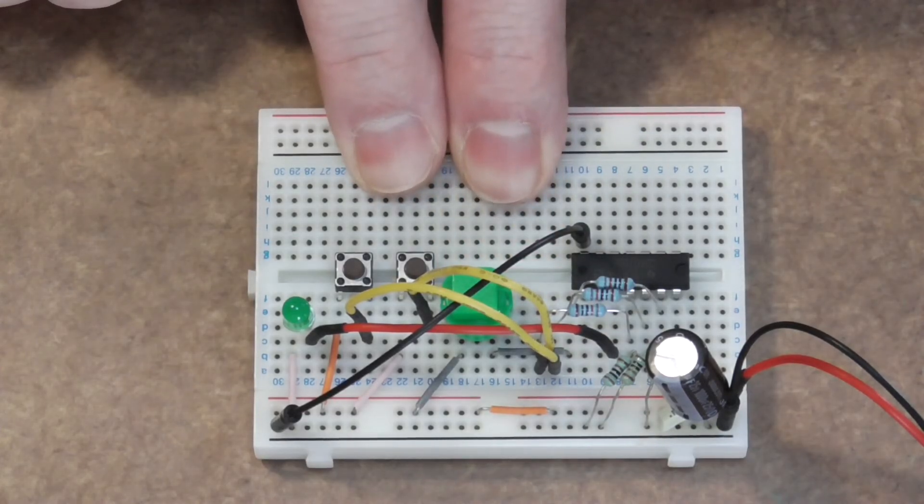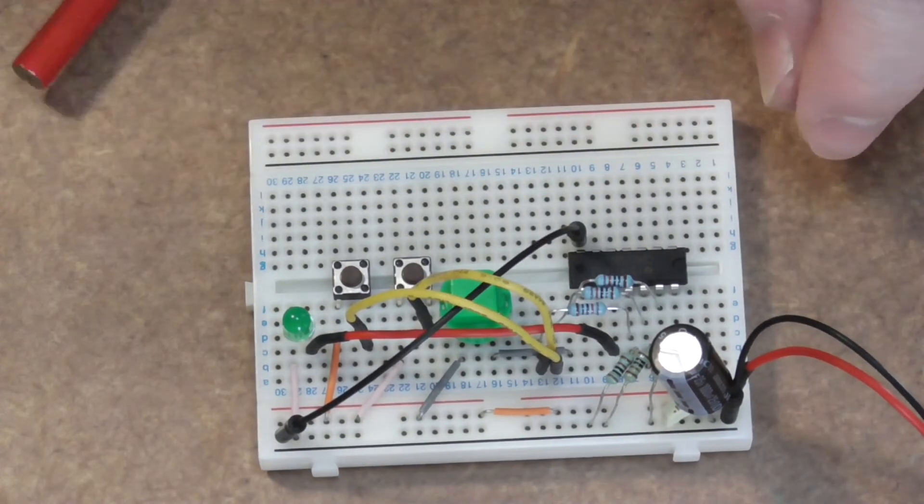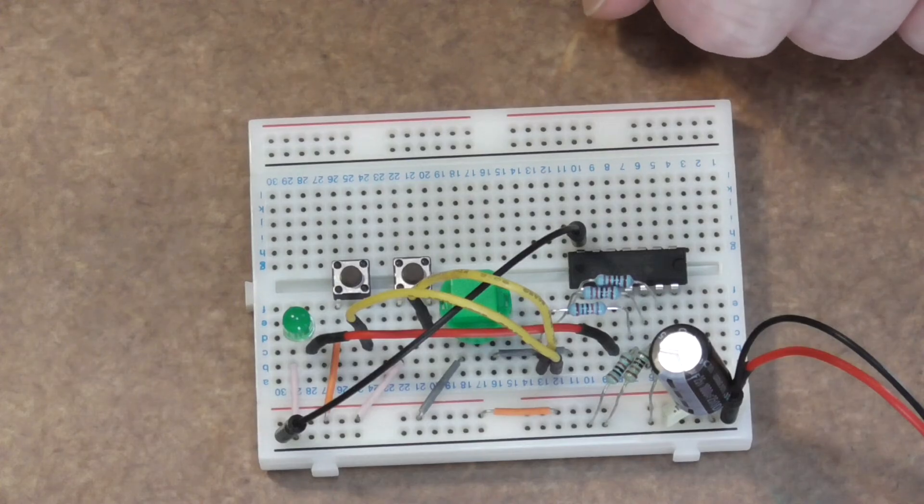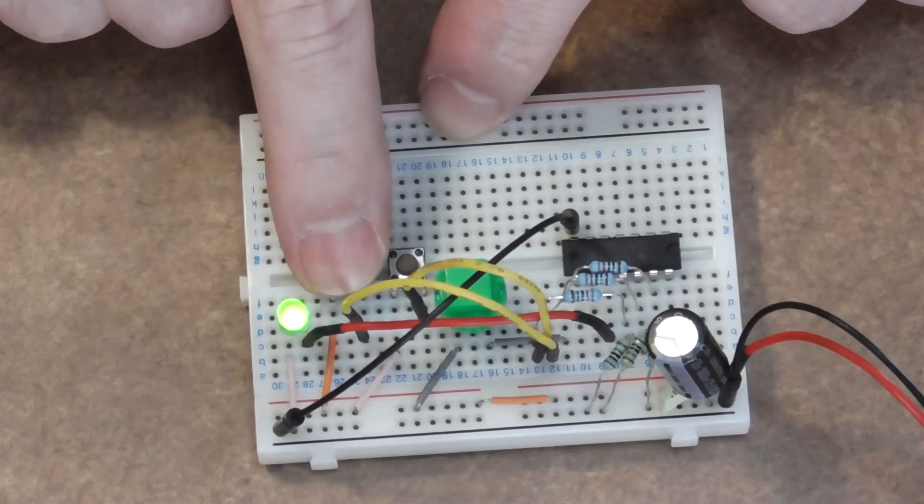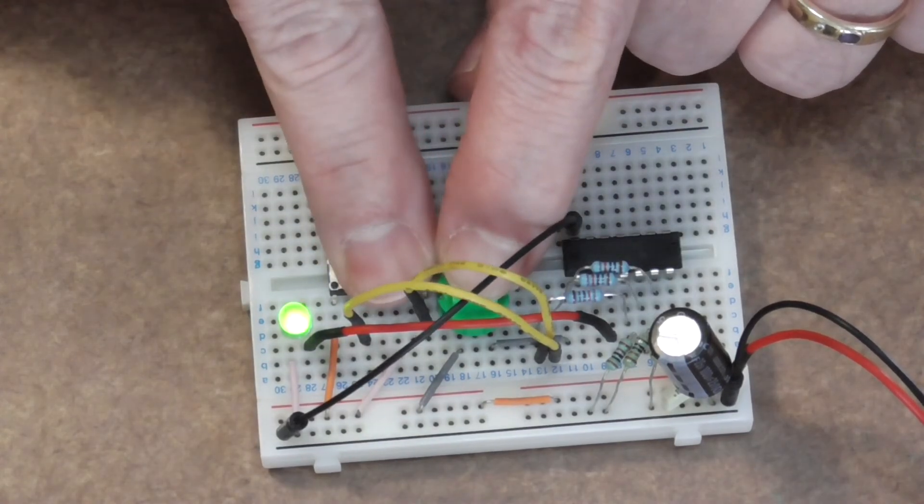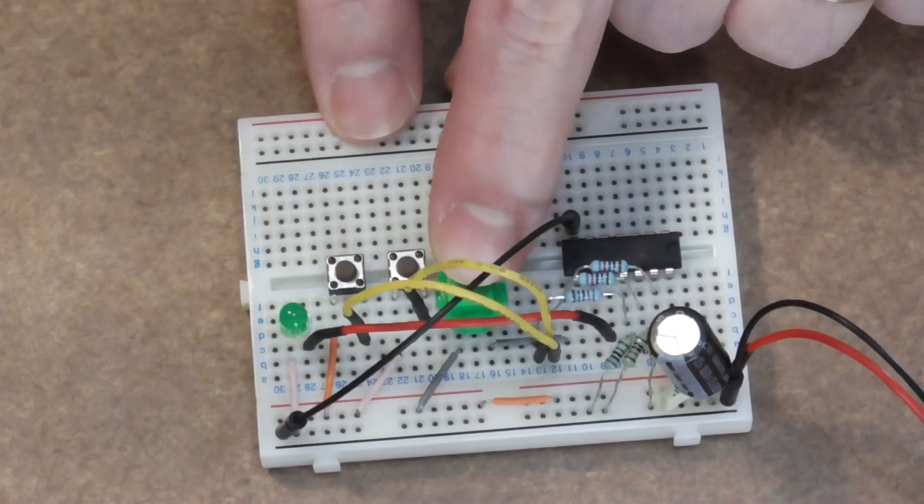Very simple. Very easy to use. We've got three logic gates in one IC, and any input, that one, or that one, or that one, or all three of them, will give me an output. Brilliant. What can I say? So, there you go.